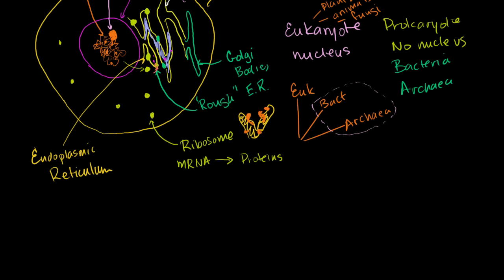Let me draw a blowup of that. Imagine the membrane of the endoplasmic reticulum with a ribosome attached to it. mRNA can come in through here, going in one direction, getting translated into proteins. As the amino acid chain is built up, it pops out on the inside of the membrane.